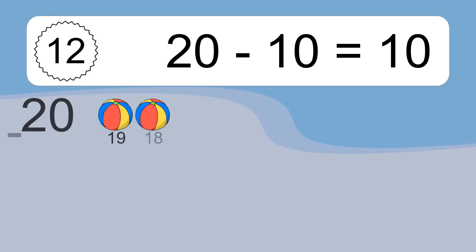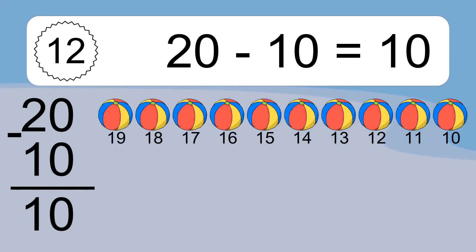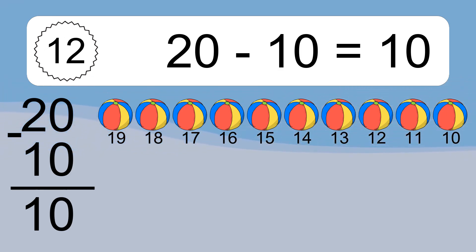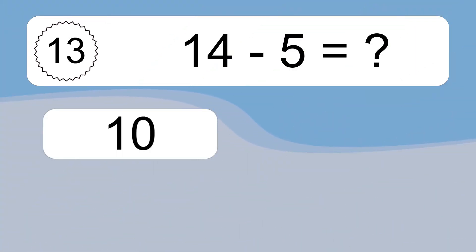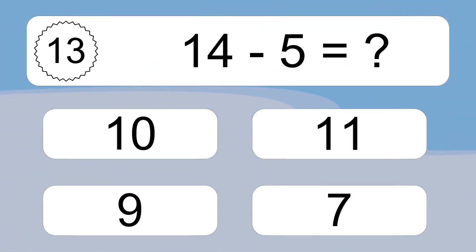20 minus 10 equals 10. Let's count it! 19, 18, 17, 16, 15, 14, 13, 12, 11, 10. 14 minus 5 equals what?